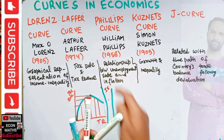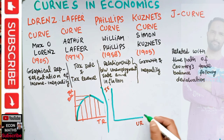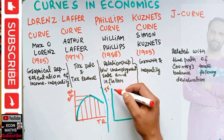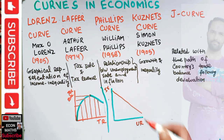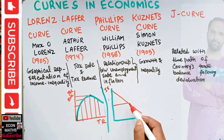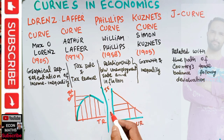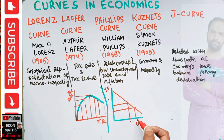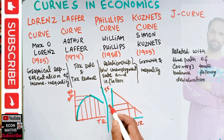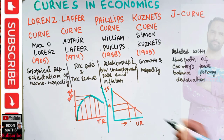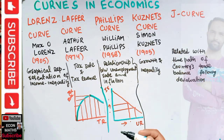There is a negative relationship between unemployment and inflation in the short run — this was given by William Phillips for the short run. If the unemployment rate increases, inflation will decrease. Similarly, if the unemployment rate decreases, the inflation rate will increase. So there is a negative relationship between unemployment rate and inflation.